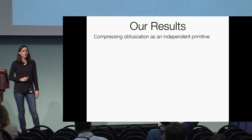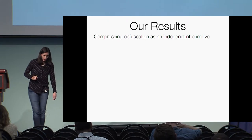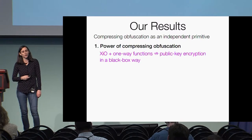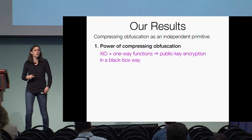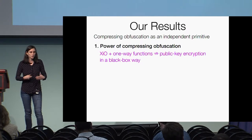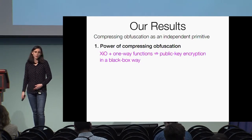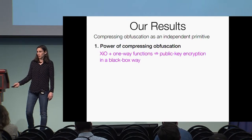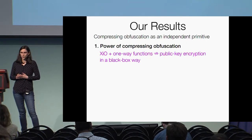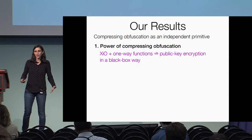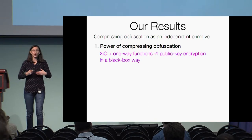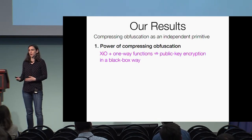In particular, we have the following main results. We look at compressing obfuscation as an independent cryptographic primitive and first look at its power. We're able to show that XIO is weak: with one-way functions, XIO does not imply public key encryption in a black-box way. This holds even if the XIO and one-way functions are sub-exponentially secure, and even if the public key encryption is only polynomially secure. Moreover, since IO does imply public key encryption when assuming one-way functions, this actually separates XIO from IO, showing that XIO is the first thing that does not come from standard assumptions which is provably weaker than IO, yet implies it with standard assumptions.